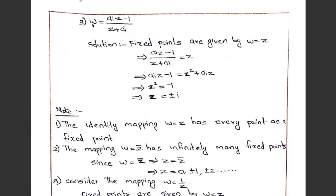Another example: w equal to (aiz minus 1)/(z + ai). Fixed points by putting w equal to z. So f(z) equal to z implies aiz minus 1 equal to z(z + ai). Cross multiplying: z squared equal to minus 1, so z equal to plus or minus i. Thus plus or minus i are the fixed points of this function.